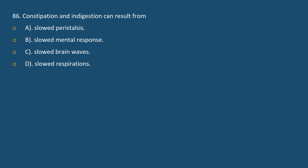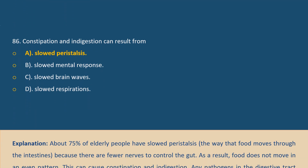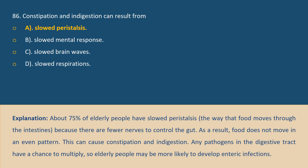Question 86: Constipation and indigestion can result from: A. Slowed peristalsis, B. Slowed mental response, C. Slowed brain waves, D. Slowed respirations. Answer A. Explanation: About 75% of elderly people have slowed peristalsis — the way food moves through the intestines — because there are fewer nerves to control the gut. As a result, food does not move in an even pattern. This can cause constipation and indigestion. Any pathogens in the digestive tract have a chance to multiply, so elderly people may be more likely to develop enteric infections.